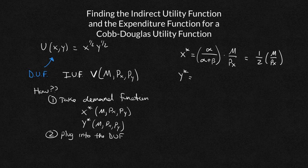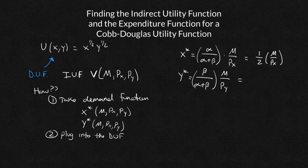And my y star, again, we already did this in the former video. You can pause and go back to that one, is beta over alpha plus beta times M over Py. And again, since beta, which is my exponent on y, is 1 half, alpha is 1 half. When I add them up, it's going to be 1. It's going to be 1 half over 1 times M over Py. We're going to write this as 1 half times M over Py.